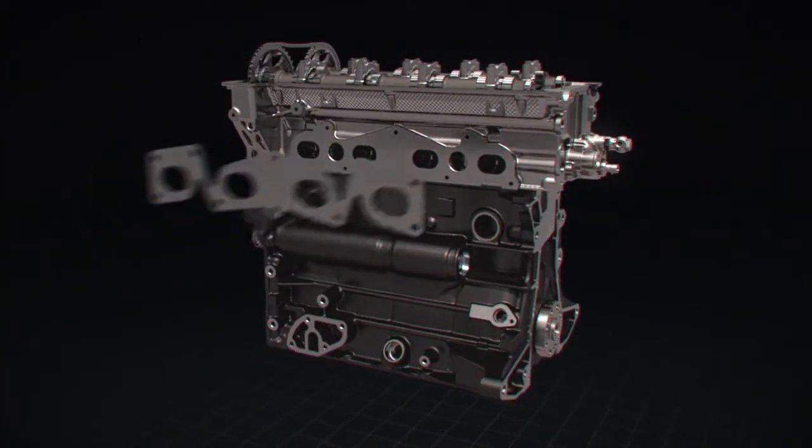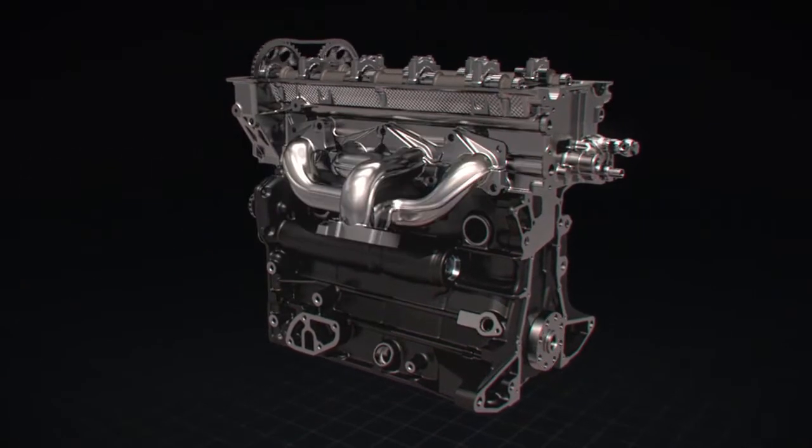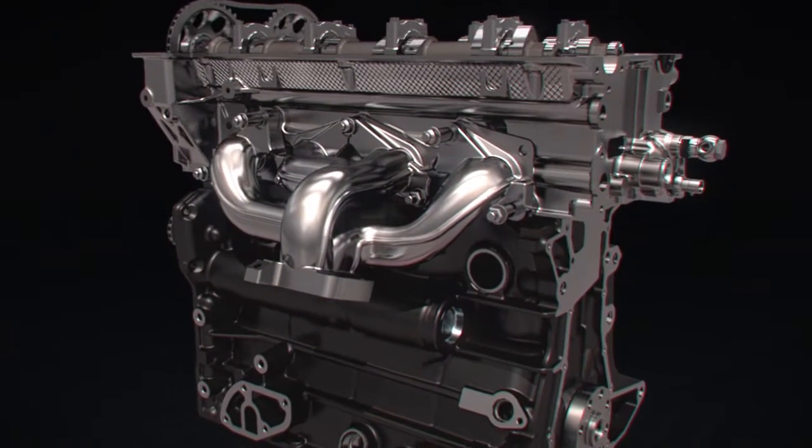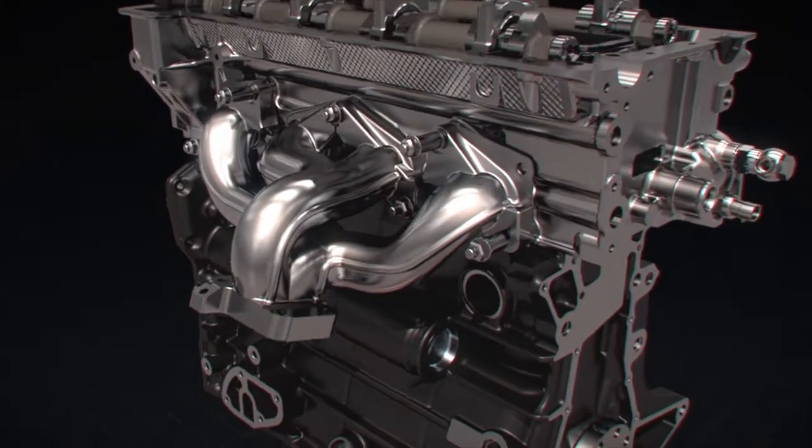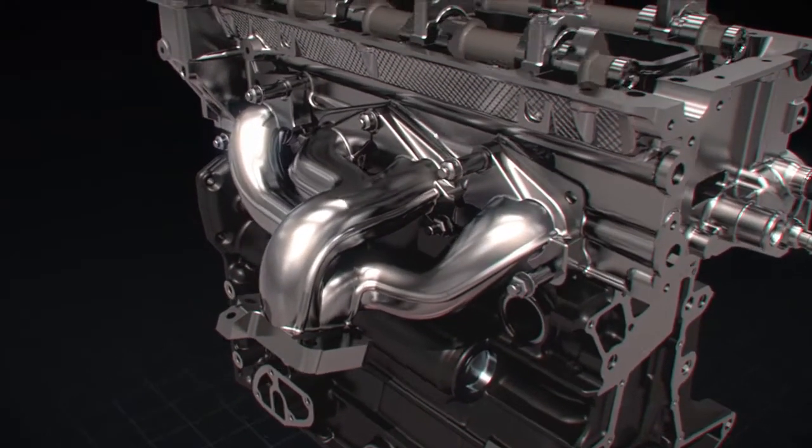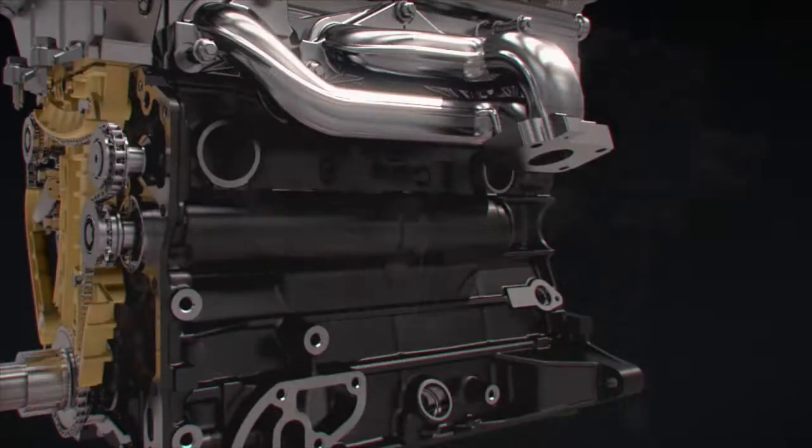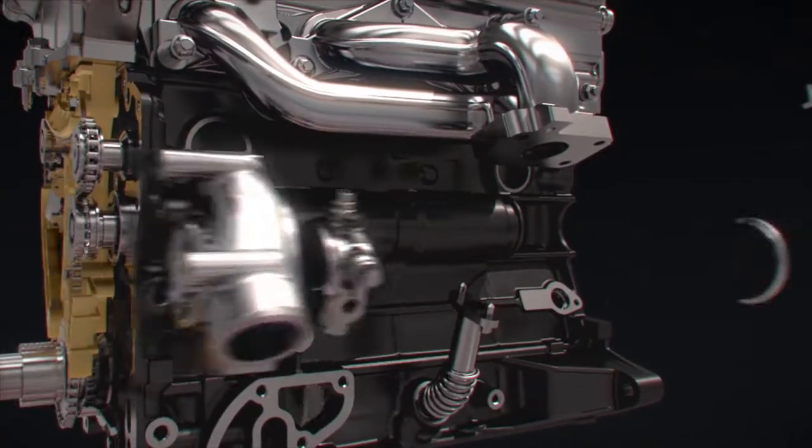The exhaust manifold is of a structural form of pulse pressure charging and the internal flow channel is of a variable cross section which can rationally organize exhaust gas flow and improve the utilization rate of exhaust energy.